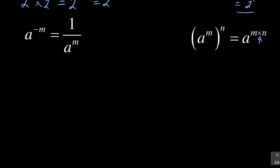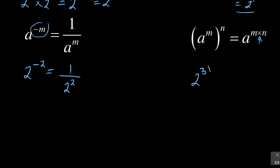For the last two laws: if I have a negative, for example 2 to the power negative 2, to get rid of that negative I put a division line — 1 over — then it's 2 to the power of 2. And if I've got 2 to the power of 3, bracket to the power of 2, this is the same as 2 to the power of 3 times 2, which is 2 to the power of 6.